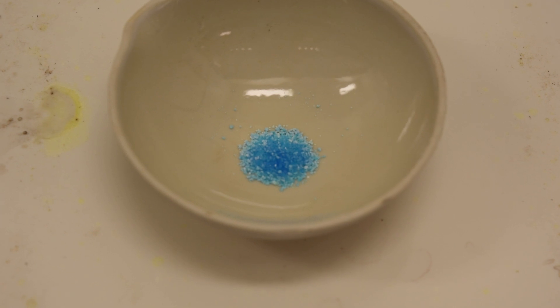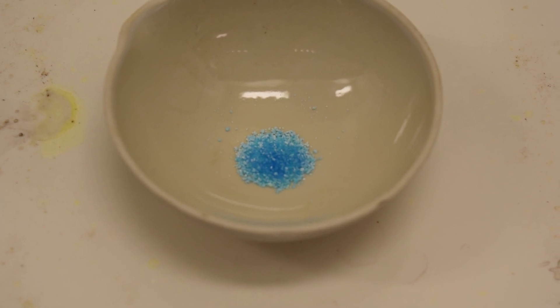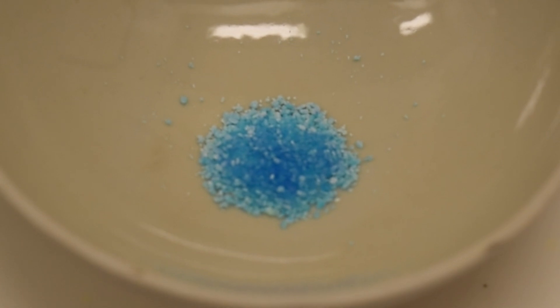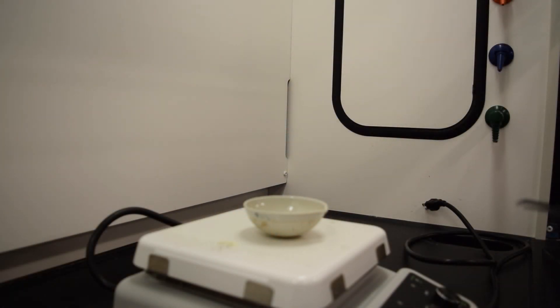Place the evaporating dish back on the hot plate and heat the hydrate. This process evaporates the water. You'll notice the color change as water evaporates.